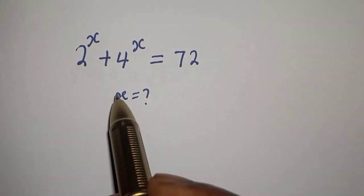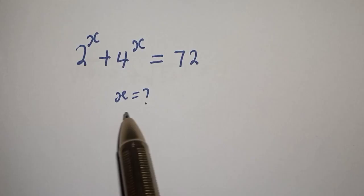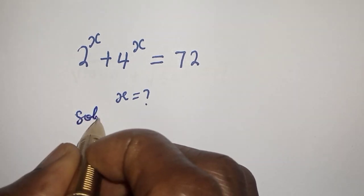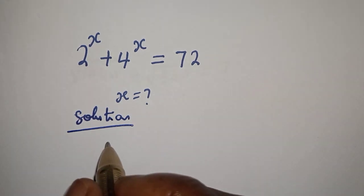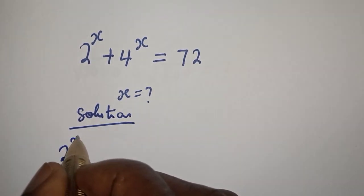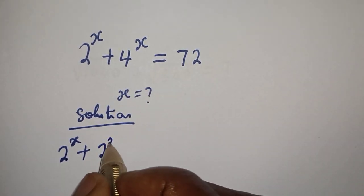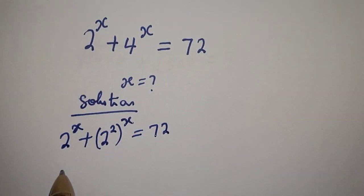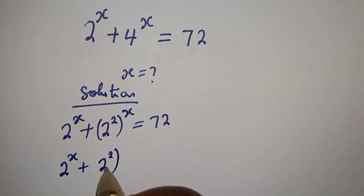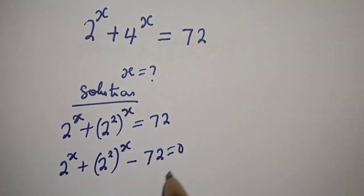Hello, welcome to Magis. In this class, we want to find the value of s from the equation 2 raised to power s plus 4 raised to power s is equal to 72. Solution: 2 raised to power s plus 4 raised to power s can be written as 2 squared raised to power s is equal to 72. Then 2 raised to power s plus 2 squared raised to power s minus 72 is equal to zero.